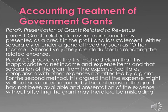Para 9: Presentation of Grants Related to Revenue. Para 9.1: Grants related to revenue are sometimes presented as a credit in the profit and loss statement, either separately or under a general heading such as 'Other Income.' Alternatively, they are deducted in reporting the related expense. Para 9.2: Supporters of the first method claim that it is inappropriate to net income and expense items, and that separation of the grant from the expense facilitates comparison with other expenses not affected by a grant. For the second method, it is argued that the expense might well not have been incurred by the enterprise if the grant had not been available, and presentation of the expense without offsetting the grant may therefore be misleading.